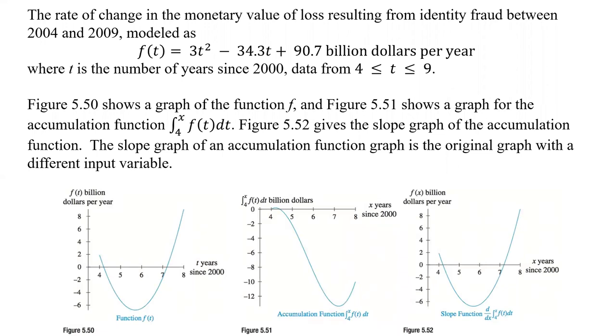So the rate of change in the monetary value of loss resulting from identity fraud between 2004 and 2009, modeled as they give us the function f(t), where t is the number of years since 2000, and the data is between years 4 and 9, for 2004 to 2009. And Figure 5.5 shows a graph of the function.